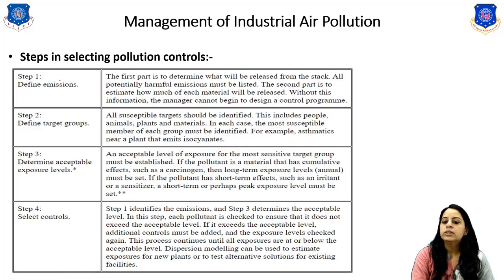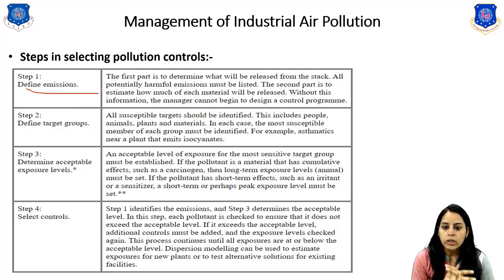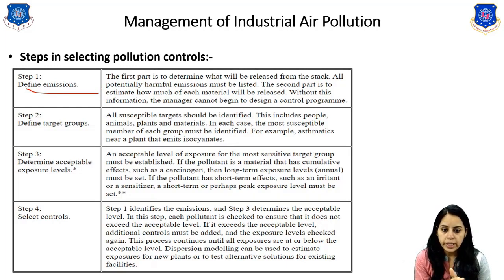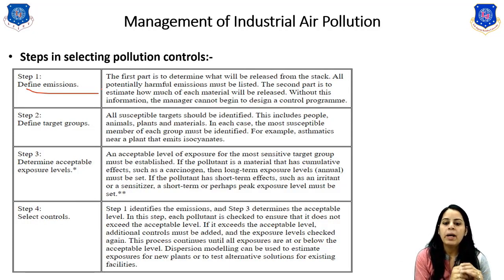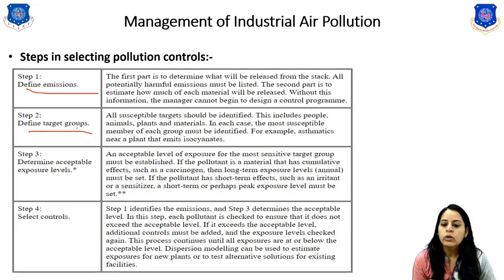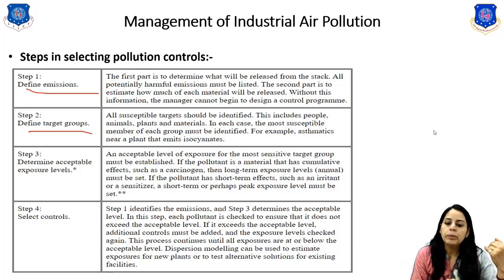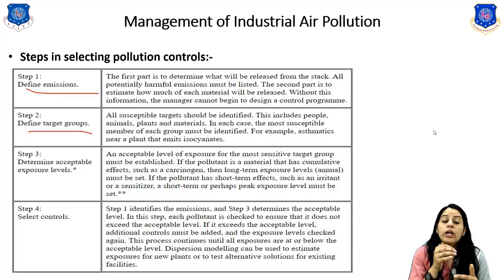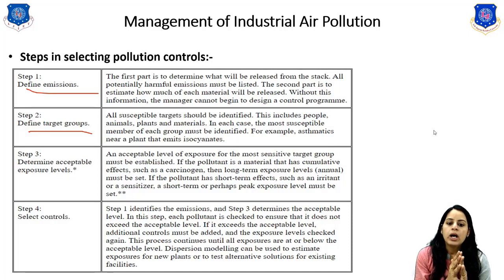The steps in selecting pollution control policy are as follows. Step 1 is to define the emissions — determine what will be released from the site. All potentially harmful emissions must be listed, and it must be determined how much of each material will be emitted. Without this information, the manager cannot begin designing the control program. Step 2 is to define the target group — all susceptible targets should be identified, including people, animals, plants, and materials. In each case, the most susceptible member of each group must be identified — for example, asthmatics near a plant emitting isocyanates.